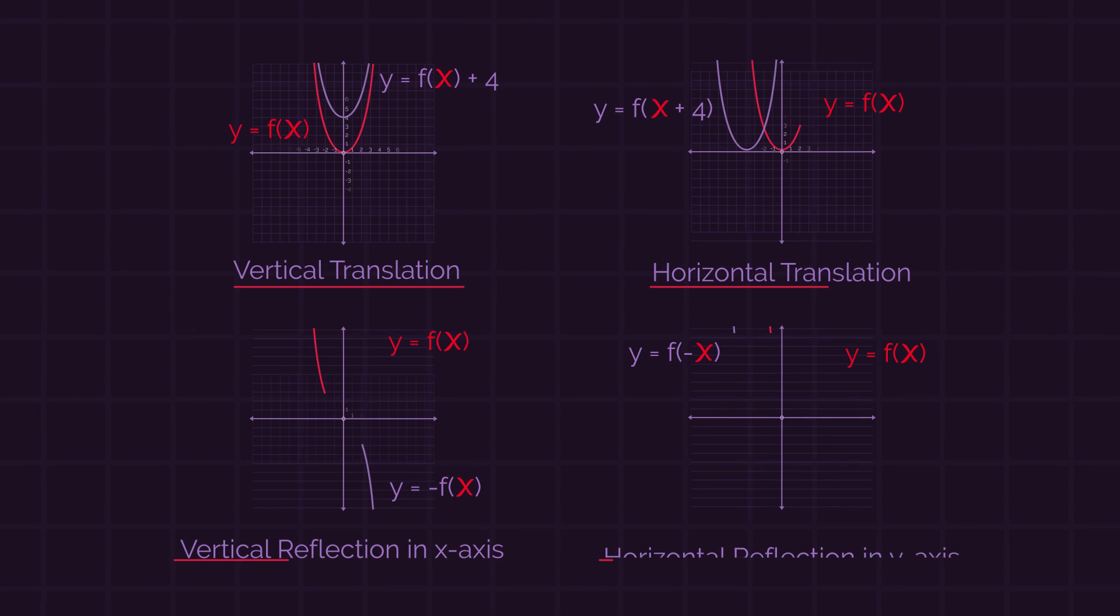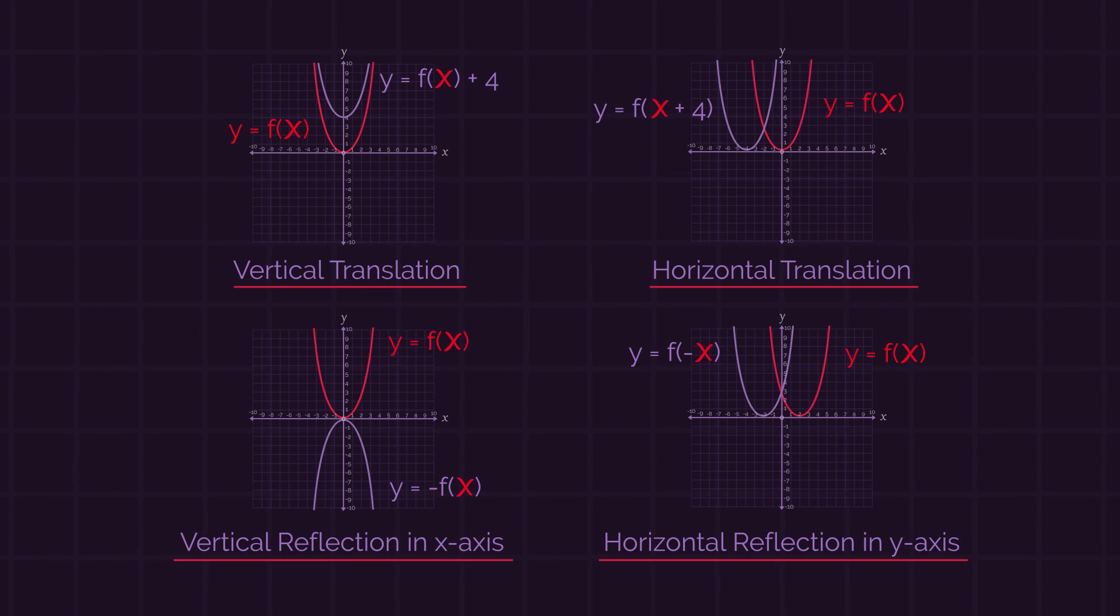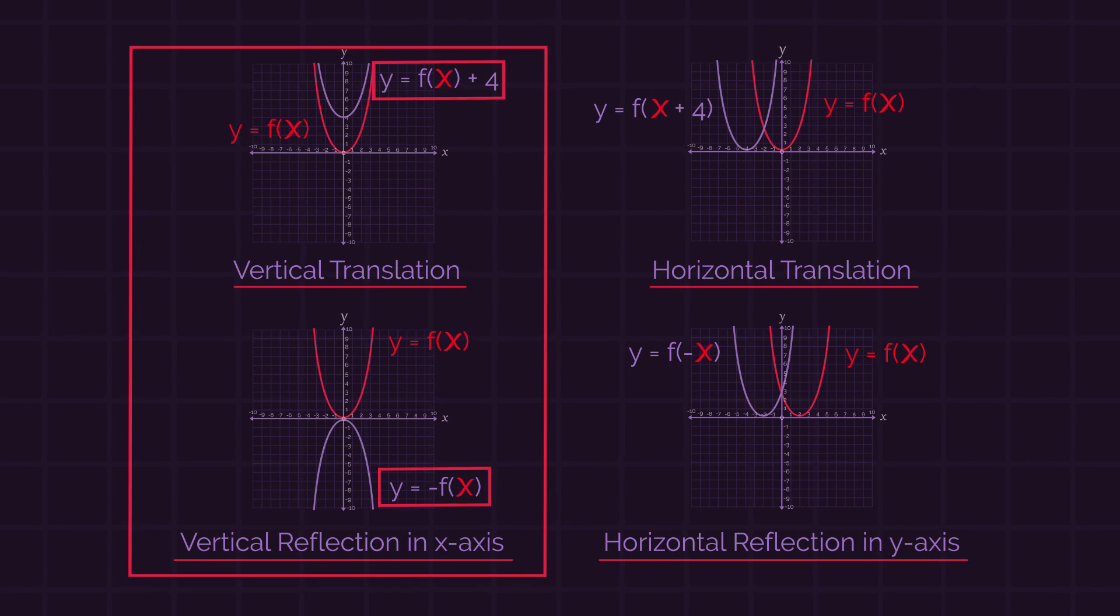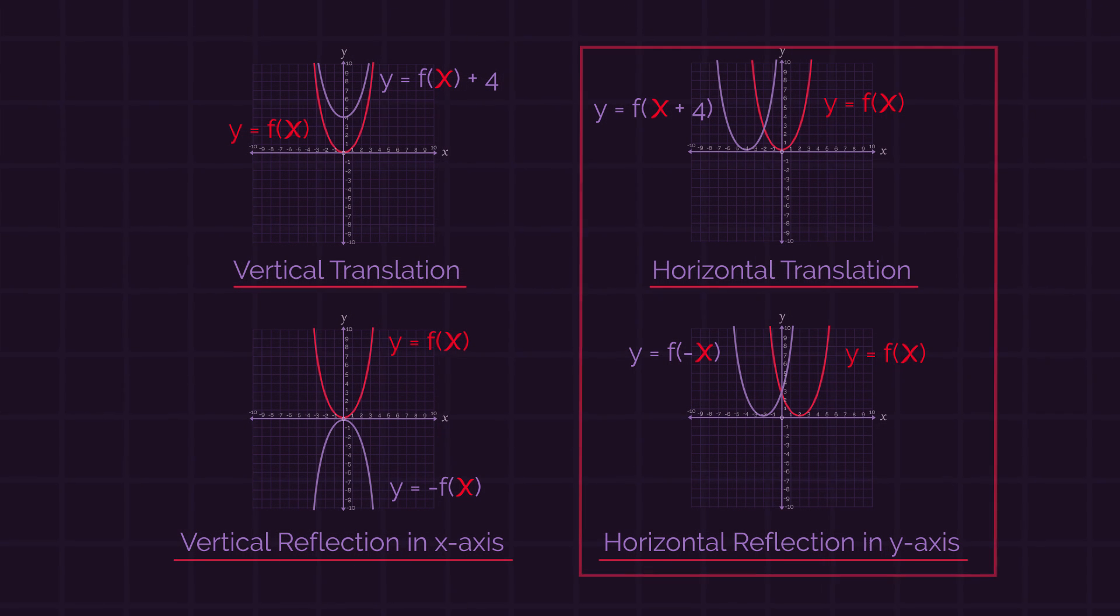So there we have vertical and horizontal translations and reflections. For vertical transformations, we apply the transformation to the whole function, so outside the brackets, whereas for horizontal transformations we apply the transformation just to the x's, so inside the brackets.